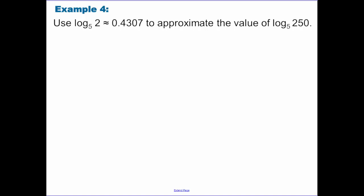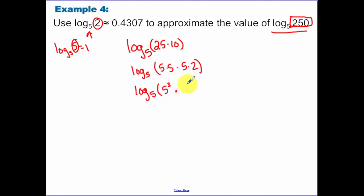Our next example is going to use those properties. We now know the fact that log base 5 of 2 is equal to some number. We need to find the log base 5 of 250. So what we need to do is we need to break 250 down into multiples of 5 because we know that log base 5 of 5 is equal to 1. So break it down into multiples of 5 and multiples of 2. 250 can be broken down into 25 times 10. That can be broken down even further into 5 times 5 times 5 times 2.